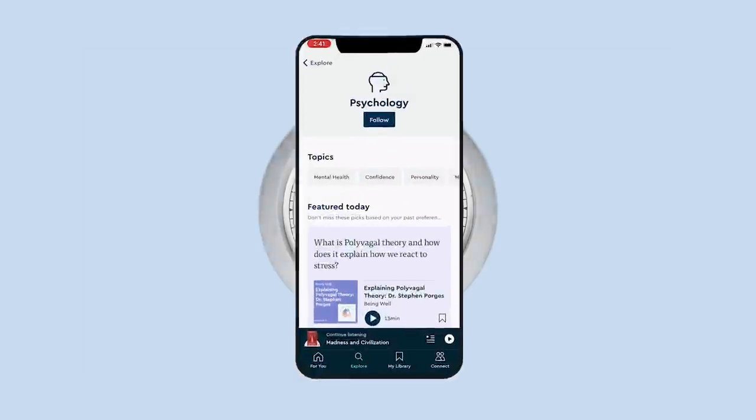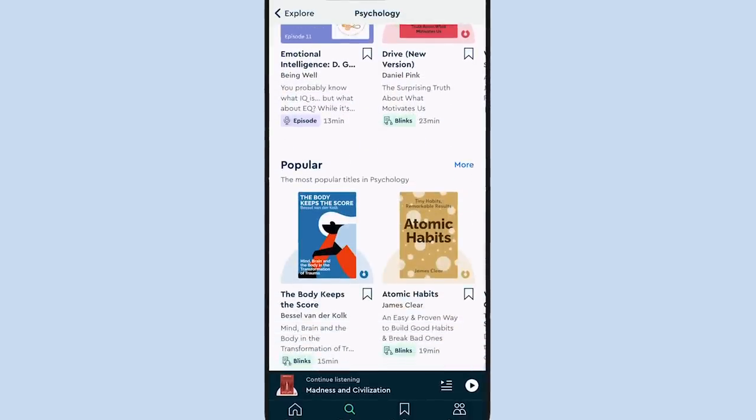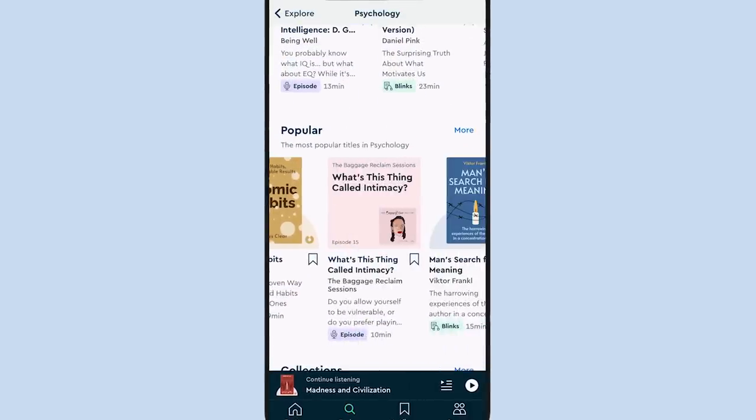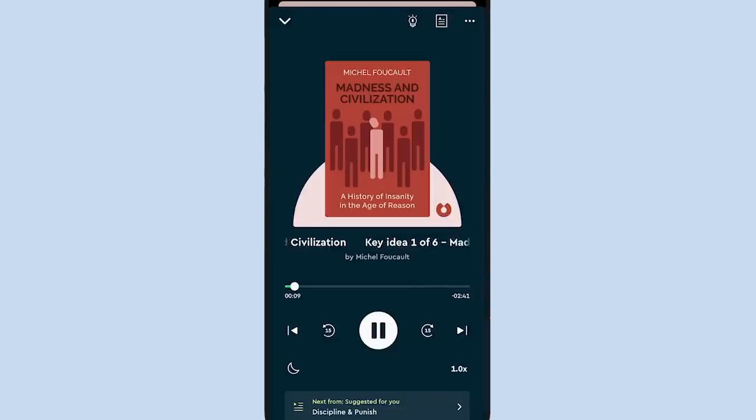But perhaps you don't necessarily want to invest the ten hours required into reading the full version. At least, not right away. Blinkist solves this problem by allowing you to explore and discover meaningful insights from books like this in a fraction of the time. All Blinkist summaries can be read or listened to and can be accessed even while you're offline.